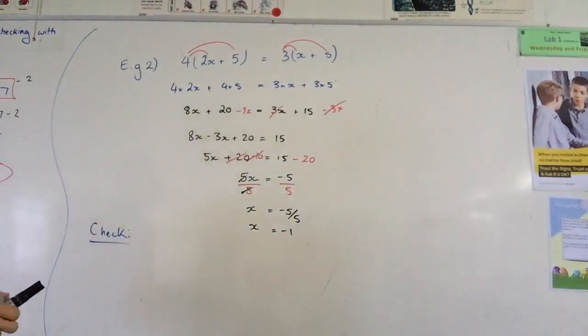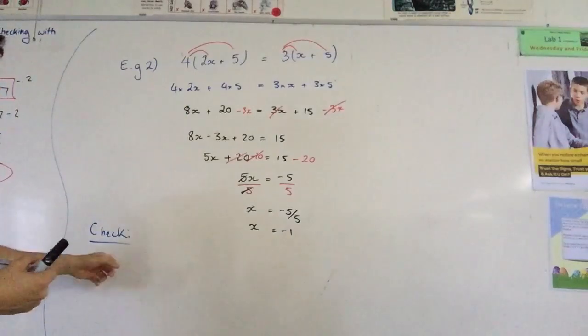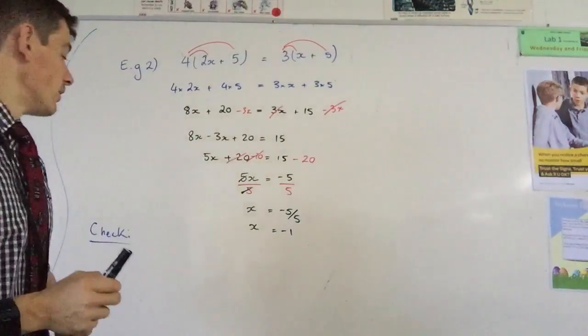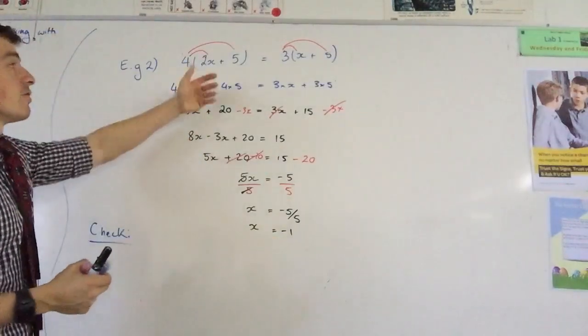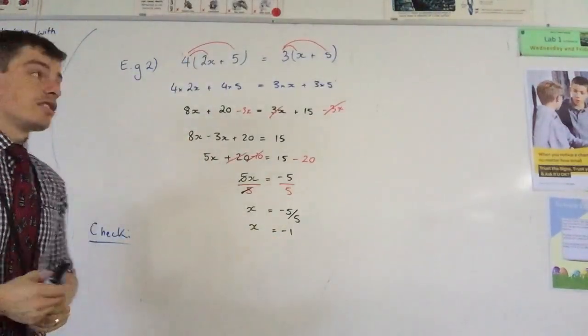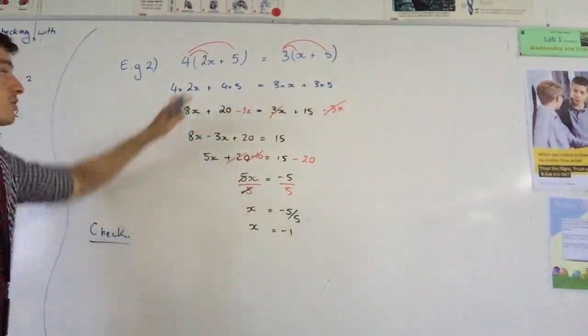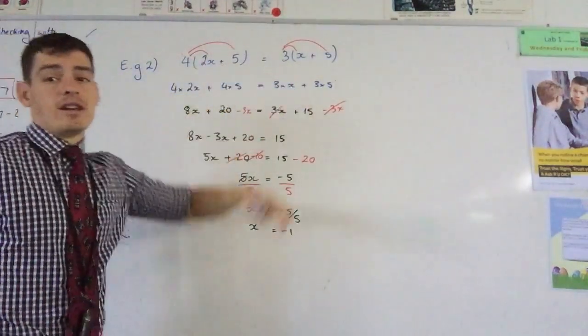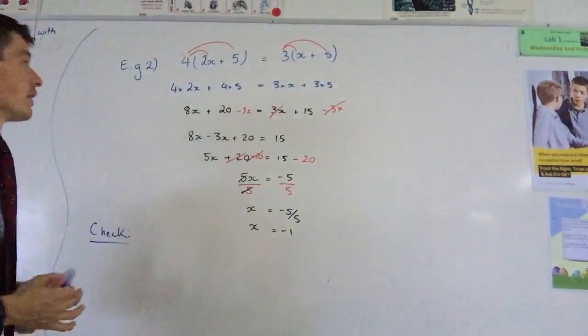So how do I check if I've made an error? Well, what I do is I get my value, negative 1, and I sub it back into my original equation. Now, this is a little bit different. Because I've got x's on both sides of the original equation, what I want to do is just put the value in, sub negative 1 in, and see if the left hand side equals the right hand side.